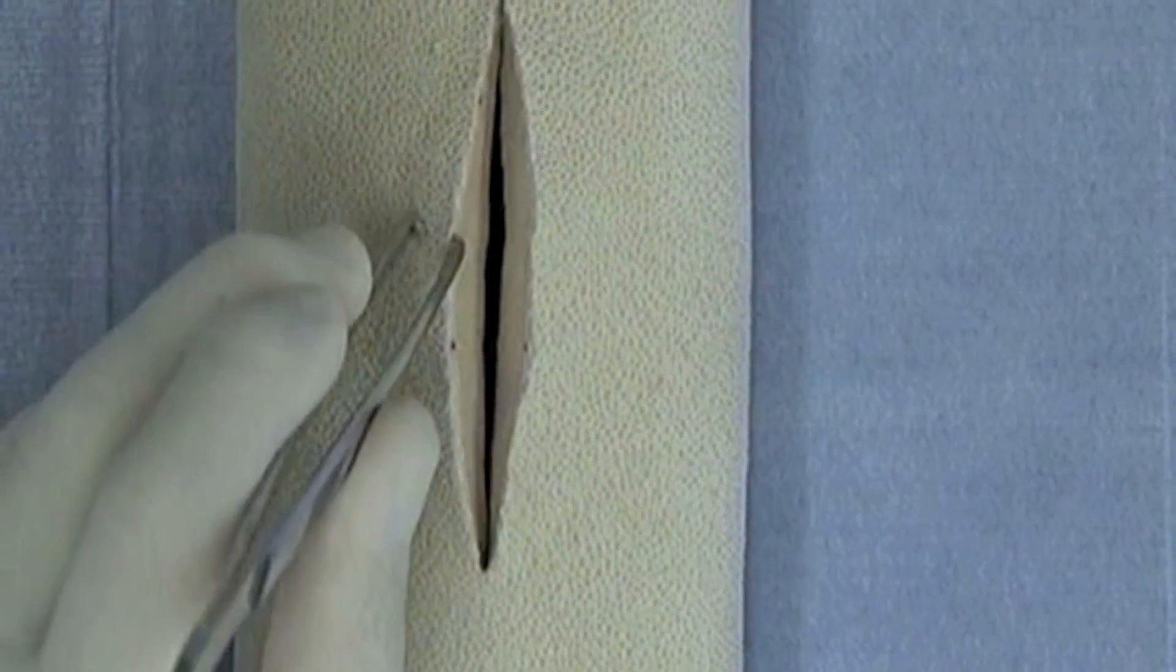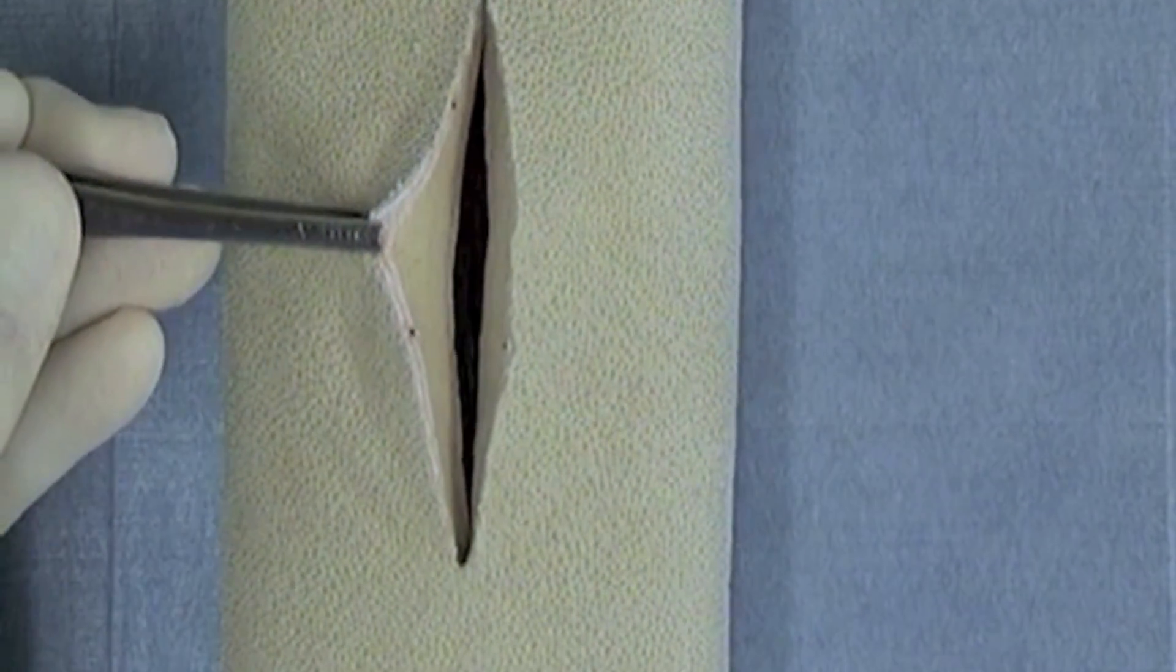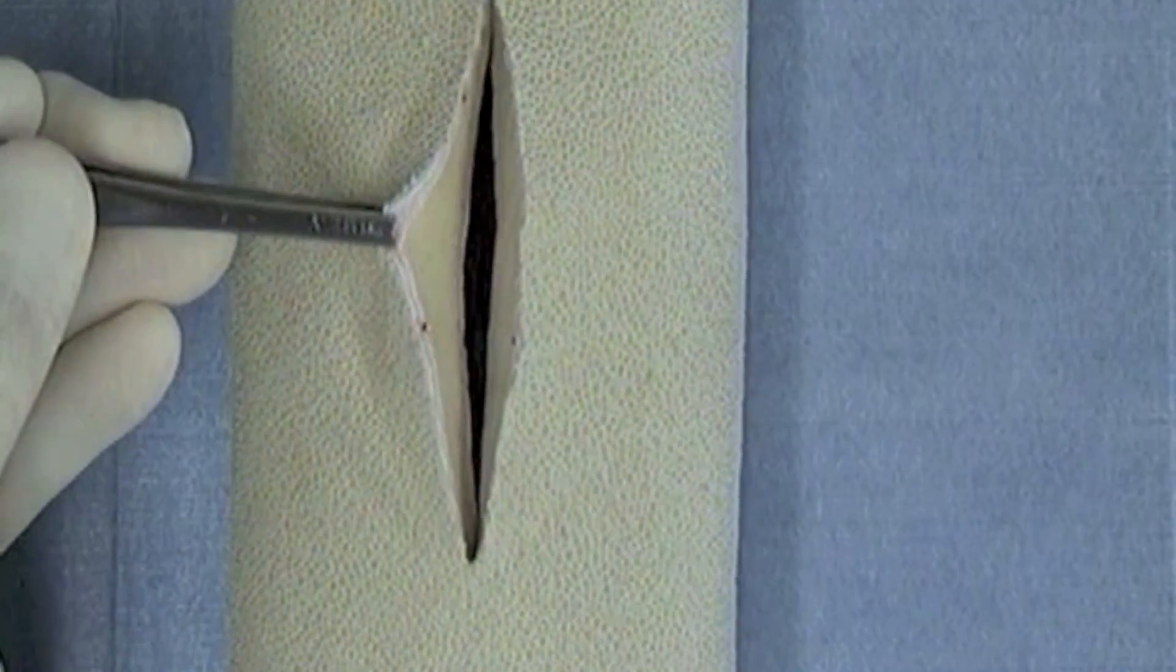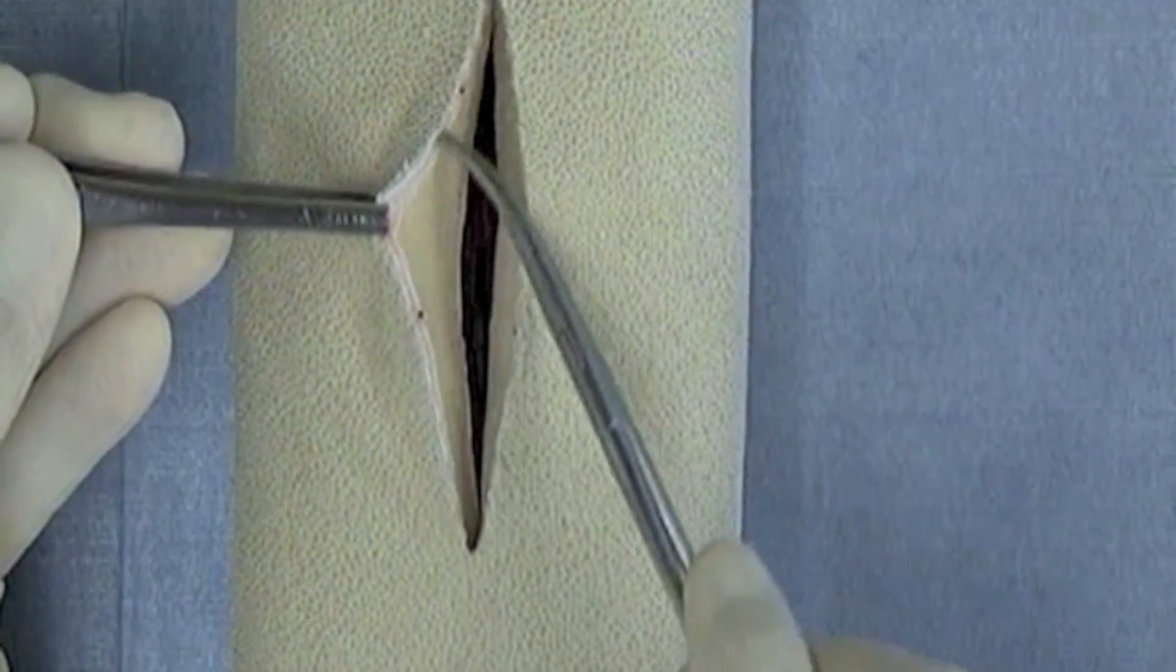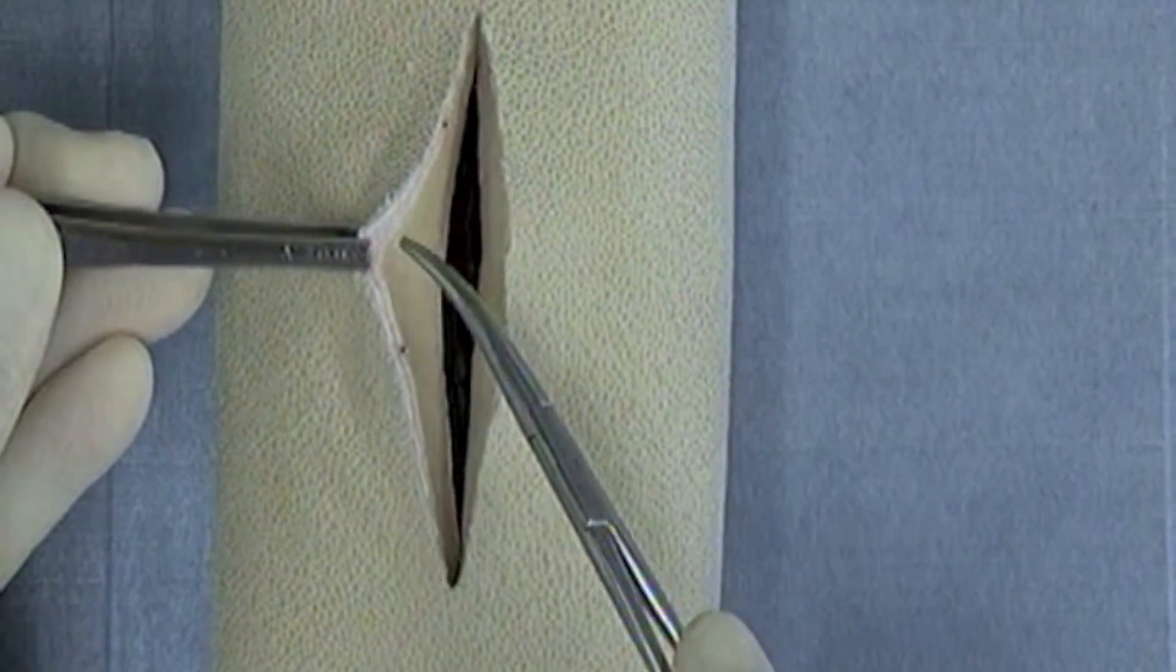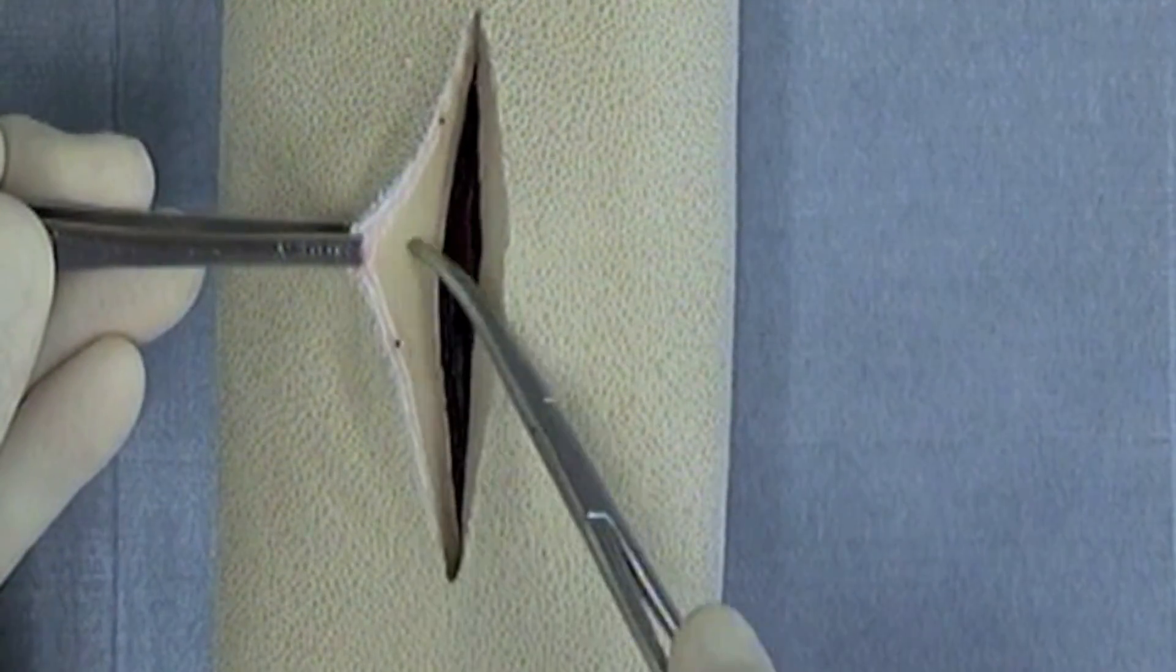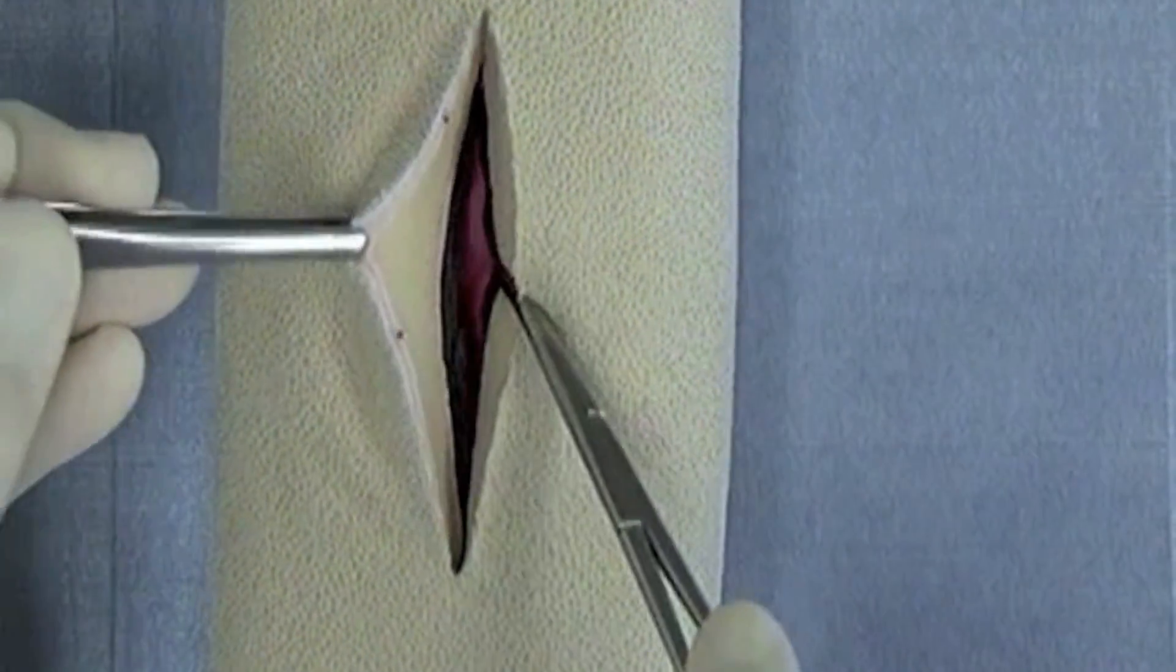I'm going to use a rat tooth forceps here to help identify a few of the layers. For instance, you will be using this white layer as the skin layer, and then this will be an expanded subcutaneous layer.